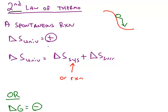A spontaneous reaction is one in which the change in entropy of the universe is always a positive number. The universe is made up of two things: what you're studying, which is the system, plus everything else in the universe, which is called the surroundings. In chemistry, you can replace delta S system with delta S reaction, since if we're looking at a chemical reaction, that's our system.